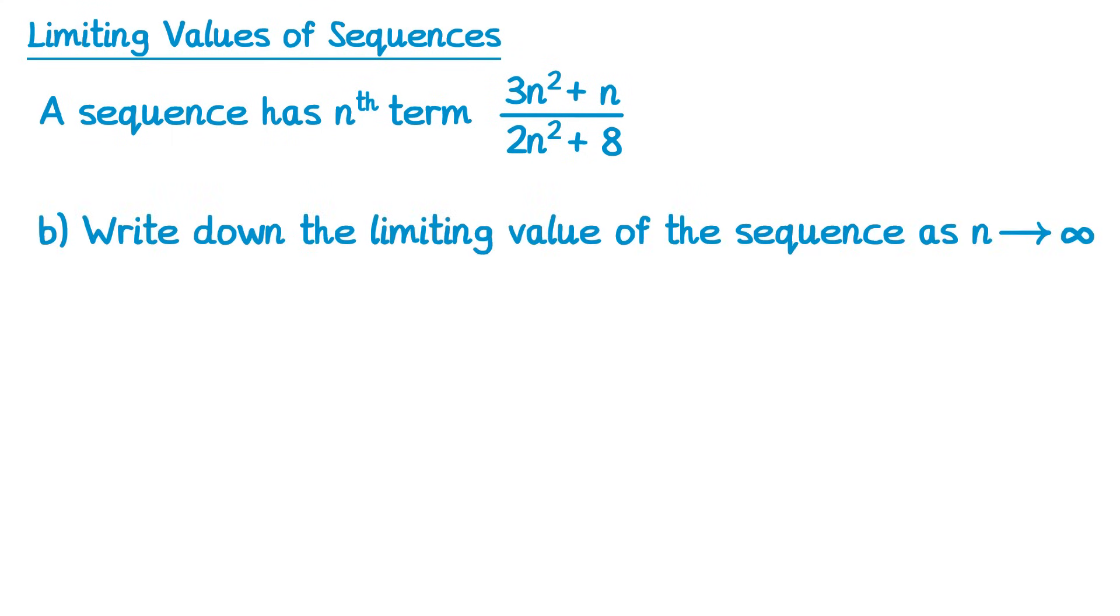Now for part b, we'll find the limiting value of the sequence, so the plus n and the plus 8 will become less significant as n gets very very large, so we end up with 3n squared over 2n squared, cancel the n squareds, and we have 3 over 2, or 1.5.